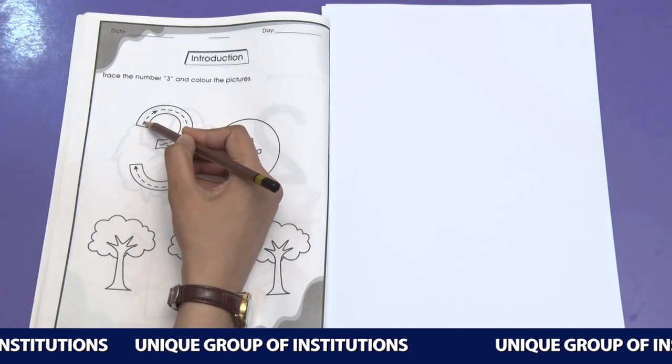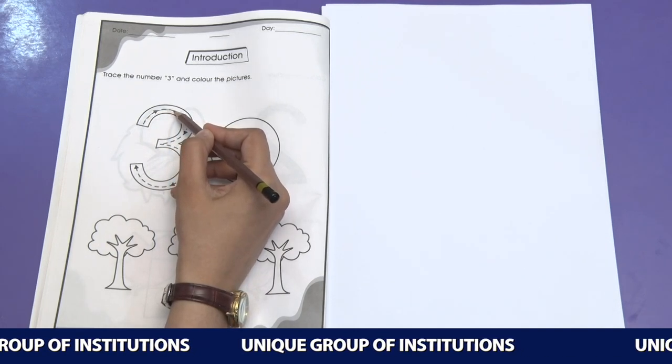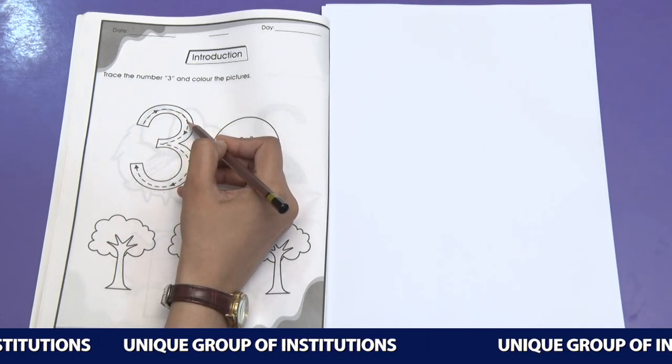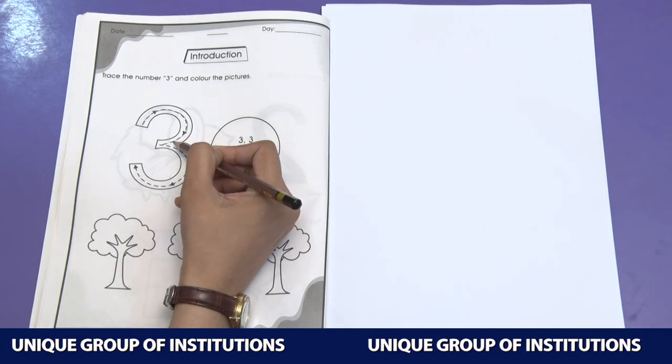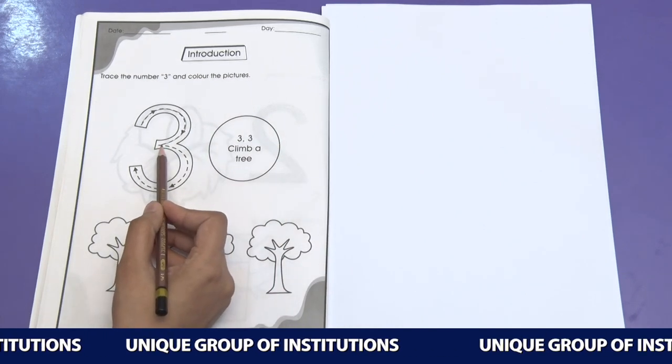Let's start from here. Start moving in the direction of the arrow and then make a curve. After one curve, we are going to make another curve.